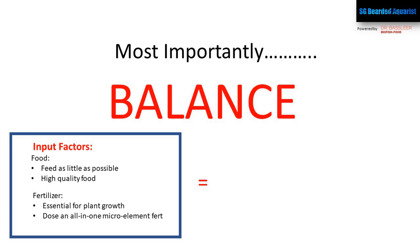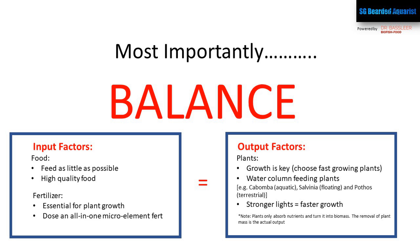To sum up: we do water changes to add micro elements and remove macro elements, so we need to replicate that without changing water. For input, focus on good food and good fertilizers. For output, we remove plants — but first we need the plants to absorb everything, which means fast-growing plants that take nutrients from the water column: things like kabomba, pothos, terrestrial plants, and most floating plants. You'll also want good lighting to drive that growth. Ultimately, it always comes back to balance between input and output.